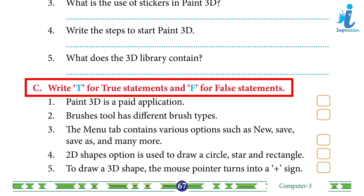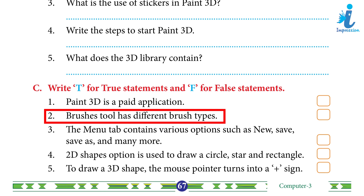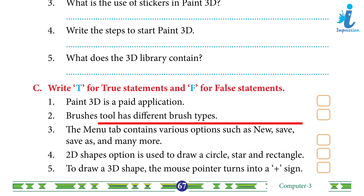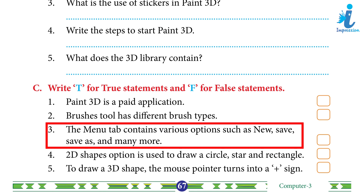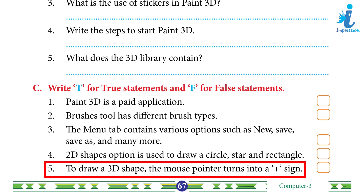Write T for true and F for false. 1. Paint 3D is a paid application. Answer: False. 2. Brushes tool has different brush types. Answer: True. 3. The menu tab contains various options such as New, Save, Save As, and many more. Answer: True. 4. 2D Shape option is used to draw a circle, star, and rectangle. Answer: False. 5. To draw a 3D shape, the mouse pointer turns into a plus sign. Answer: True.